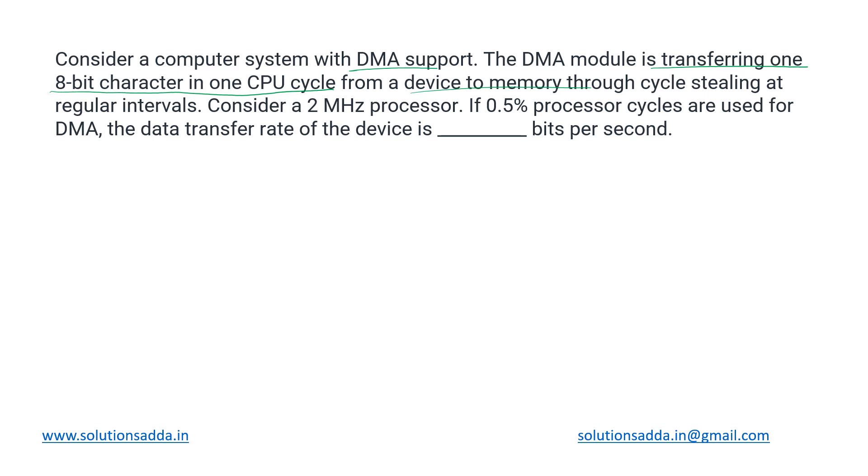The mode used here is cycle stealing mode. The speed of the processor is 2 MHz, which means in 1 second the number of cycles we will have is 2 times 10 to the power 6.